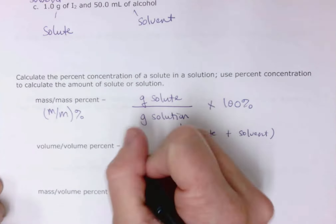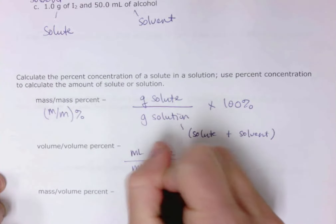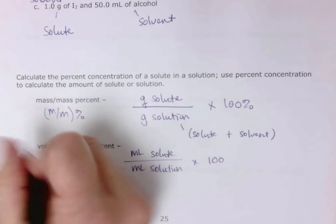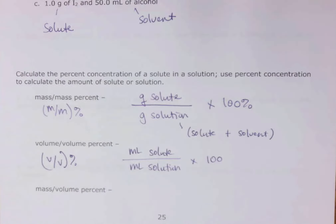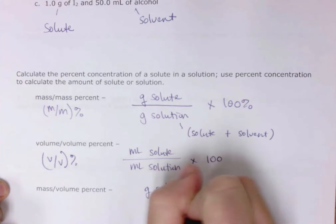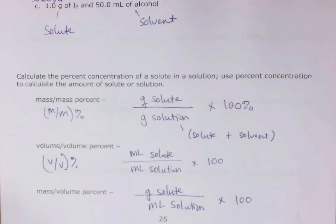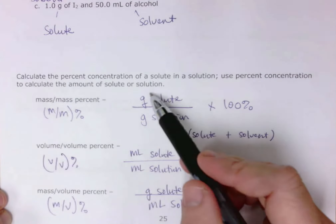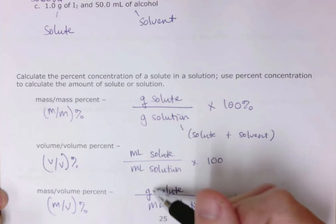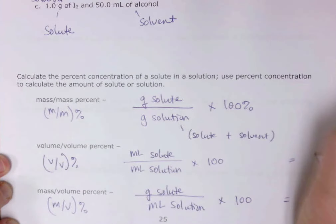The last concentration type is mass/volume percent — grams of solute over milliliters of solution times 100. When you calculate mass/mass, volume/volume, or mass/volume percent, units cancel out: grams over grams cancel, milliliters over milliliters cancel. For mass/volume, grams over milliliters don't cancel per se, but you typically just write the units as a percent.